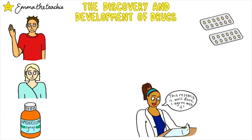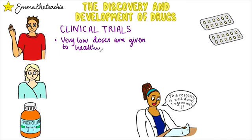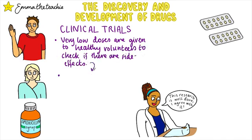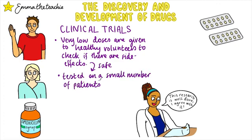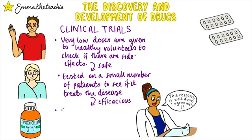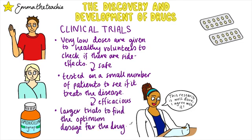If the drug passes pre-clinical trials, clinical trials may begin. These use healthy volunteers and patients. First, very low doses are given to healthy volunteers to check if they're safe or if there are any side effects. If safe, they're tested on a small number of patients to see if the drug actually treats the disease. If it does, larger further trials are carried out to find the optimum dose.